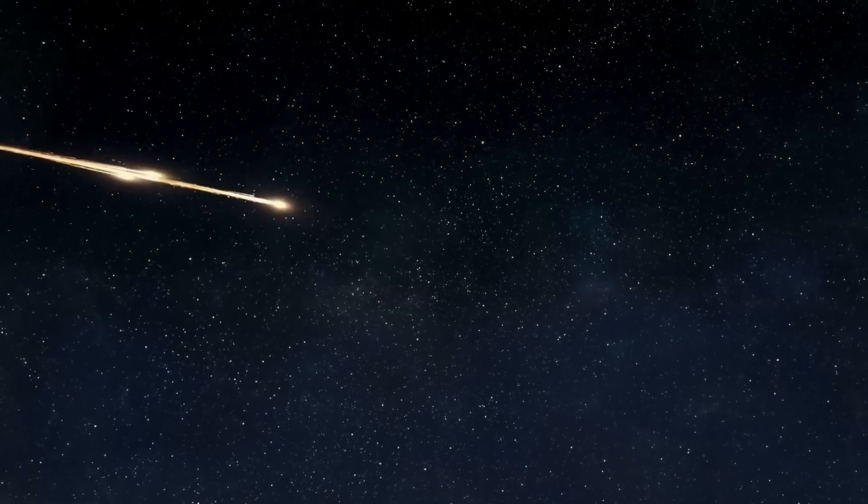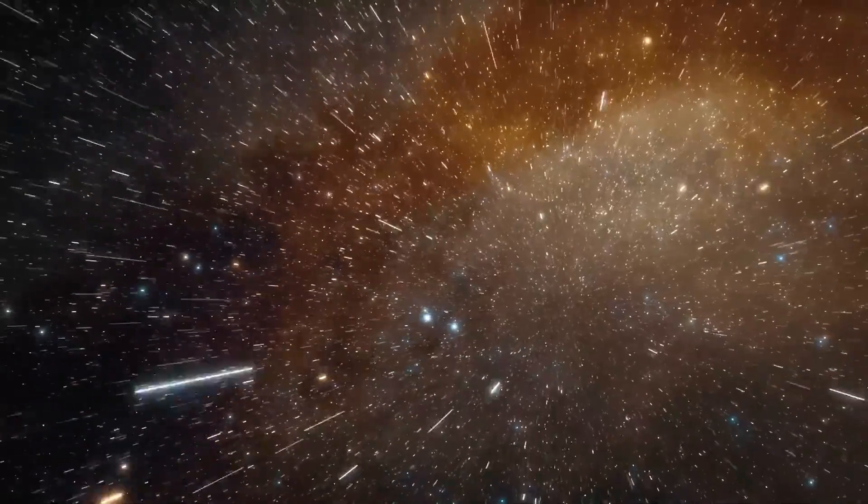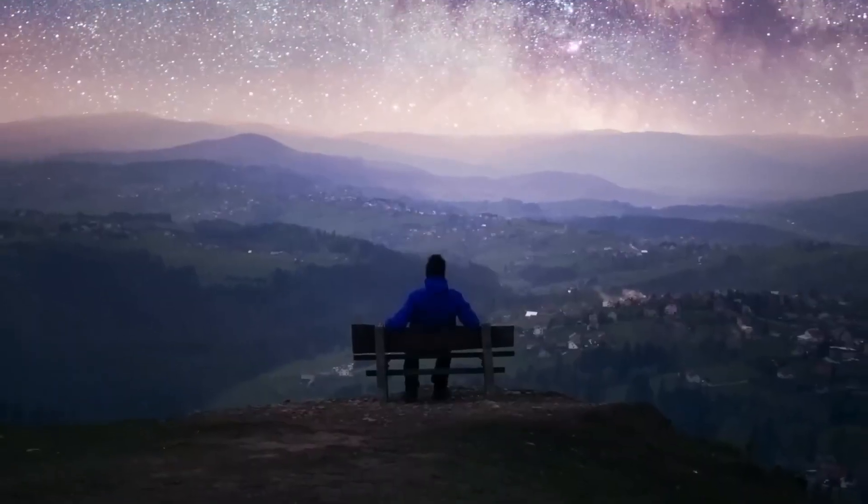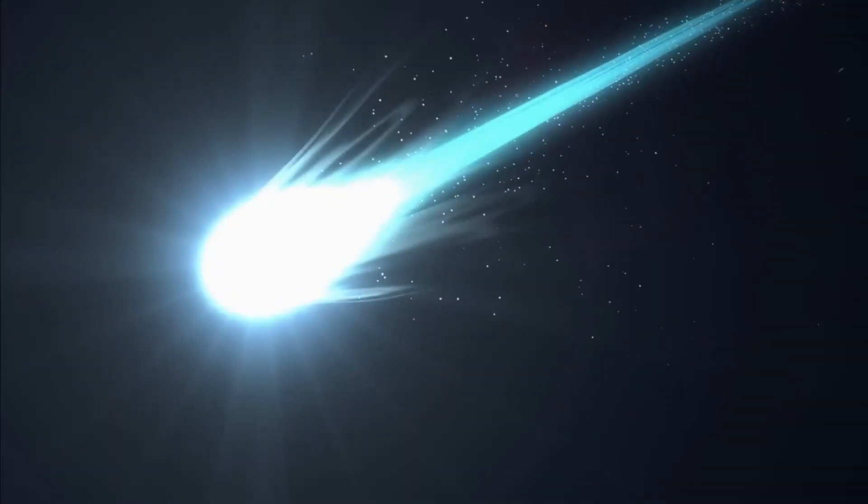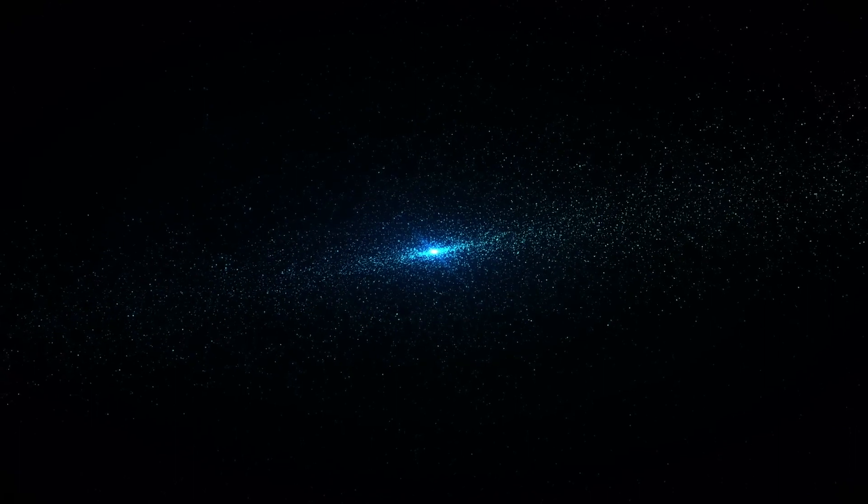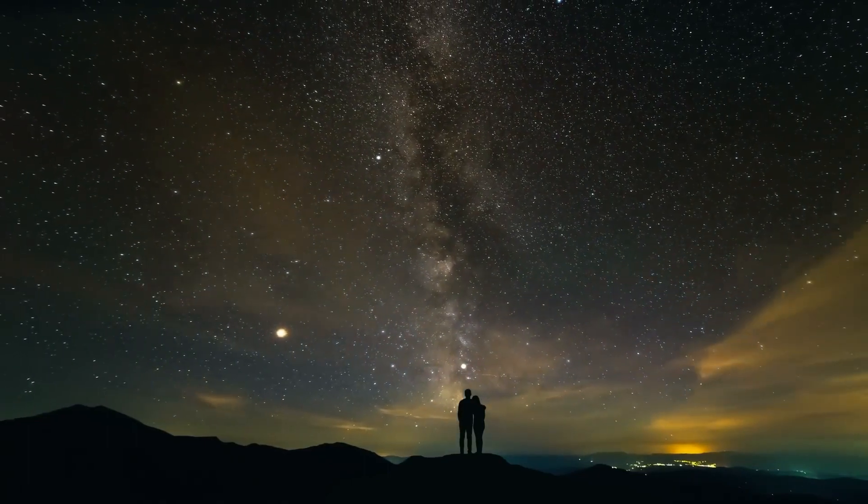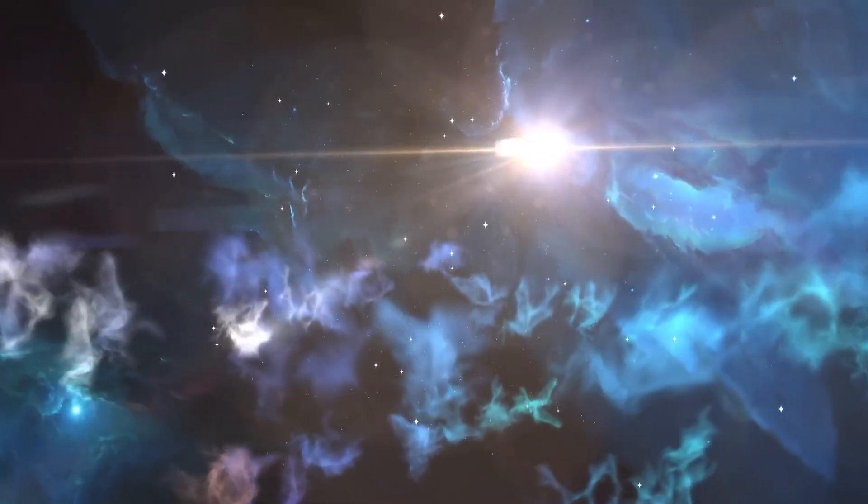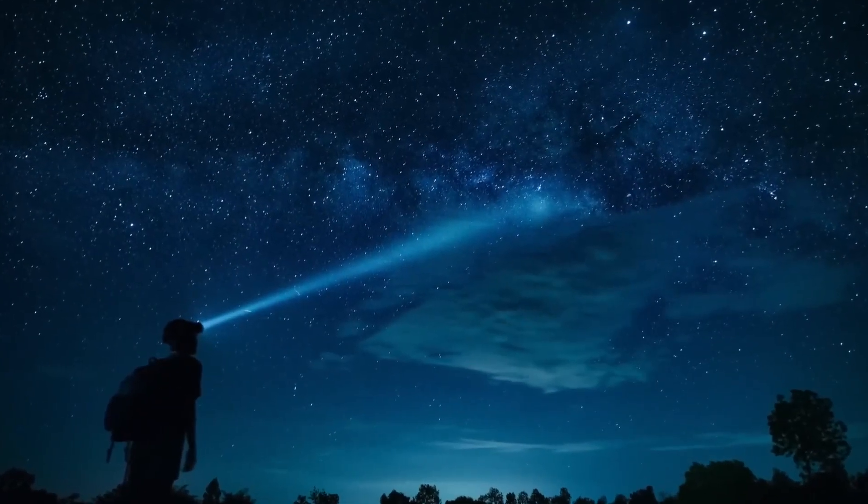To truly comprehend the vastness of the observable universe, let's start by understanding the concept of the observable universe itself. When we gaze into the night sky, the light that reaches us from distant objects has traveled for an astonishingly long time. This is because the universe is approximately 13.8 billion years old. So, when we look at something far away, we're actually observing light that left that object billions of years ago. However, there is a limit to how far we can see.